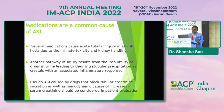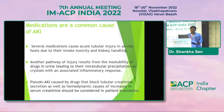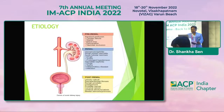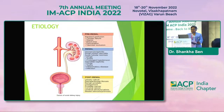There is another term — pseudo-acute kidney injury — caused by drugs that block tubular creatinine excretion, and hemodynamic causes of increases in serum creatinine should also be considered when evaluating outpatients. The etiology of AKI includes pre-renal, renal, and post-renal causes; our discussion today focuses on the renal etiology.